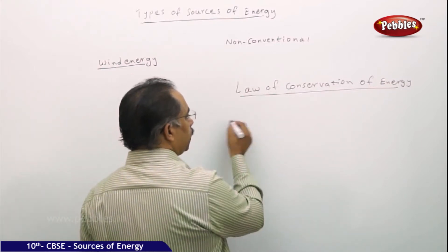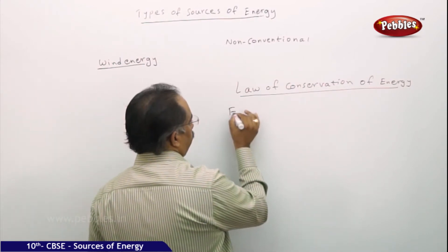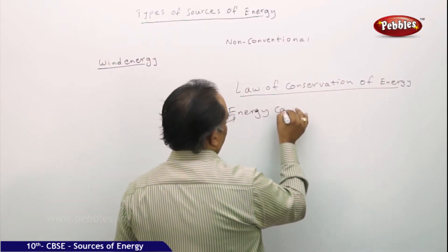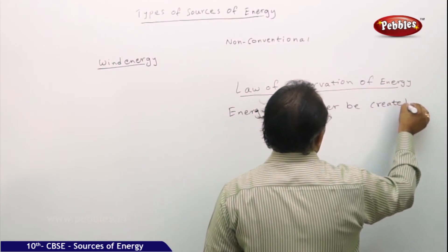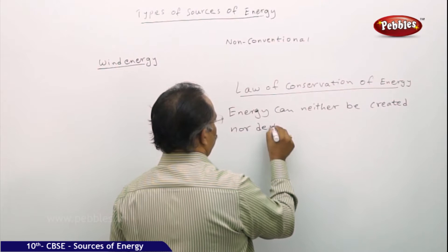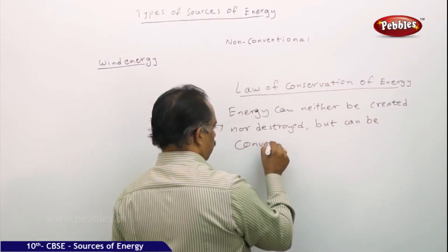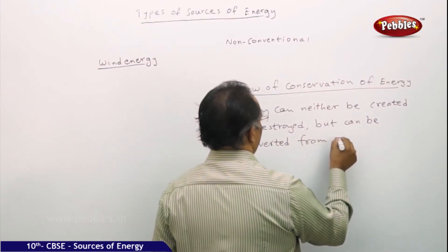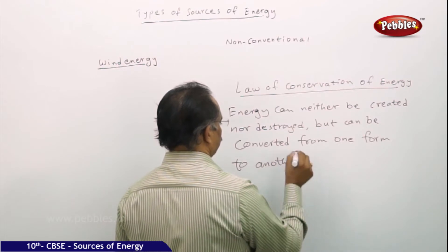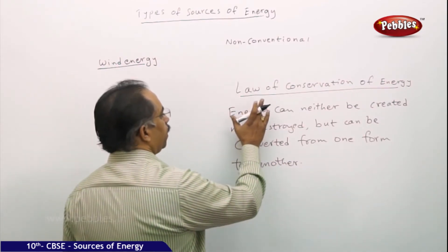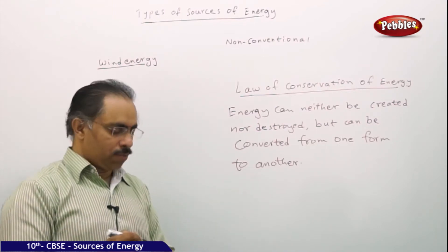This law states that energy can be transformed from one form to another, but it cannot be destroyed nor created. Energy can neither be created nor destroyed, but can be converted from one form to another. This is what we call the Law of Conservation of Energy.